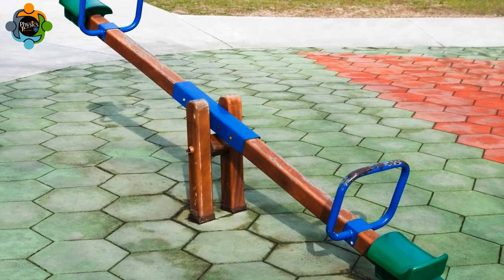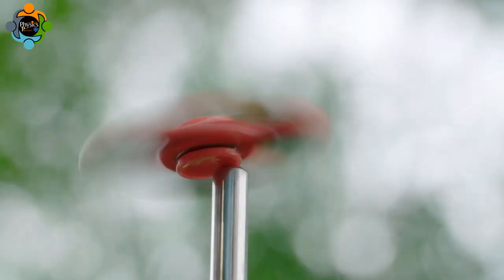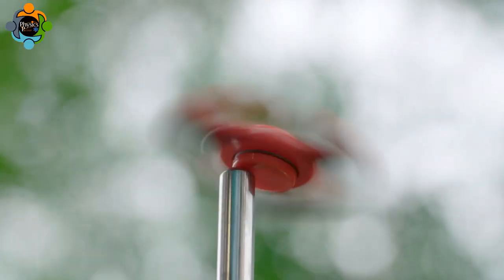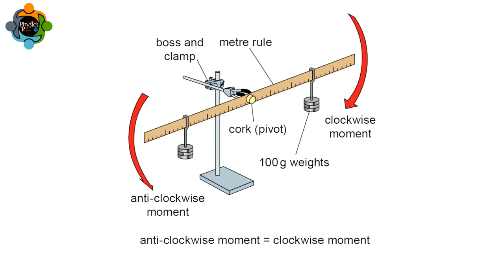An object is in rotational equilibrium if it is not rotating or is rotating at a constant speed. In this experiment an object that is in rotational equilibrium will be studied. The principle of moments states that if an object is in equilibrium around a pivot point, then the sum of clockwise moments must be equal to the sum of anti-clockwise moments. This is the condition for rotational equilibrium.